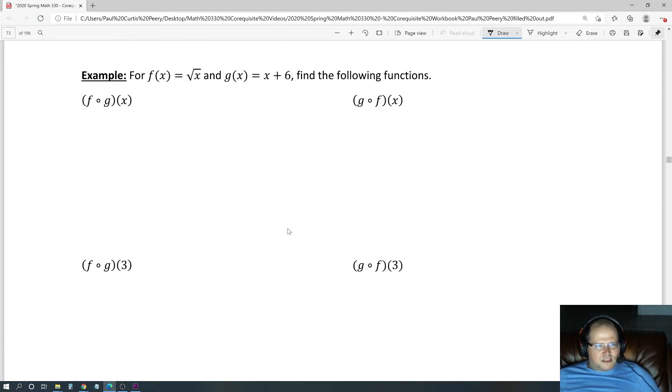For f(x) = √x and g(x) = x + 6, find the following functions. We have f of g(x). What is g(x)? g(x) is x + 6, so we have √(x + 6). That's it. I don't need those extra parentheses, so √(x + 6).